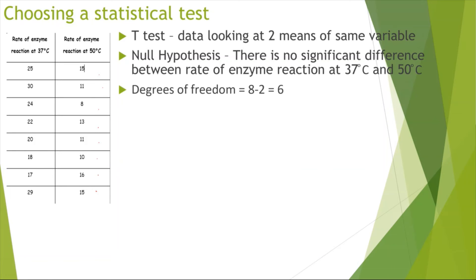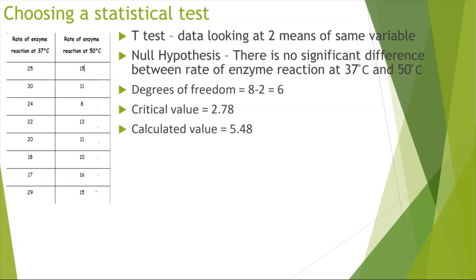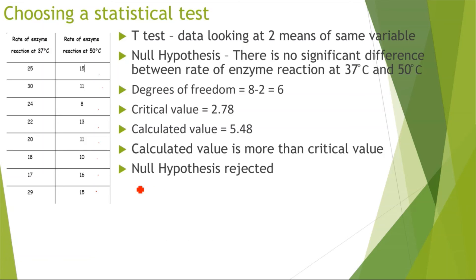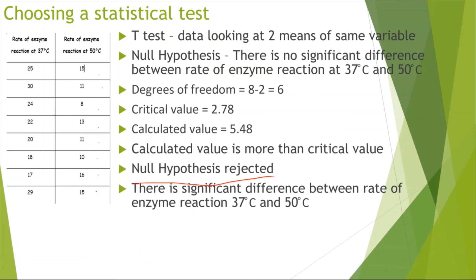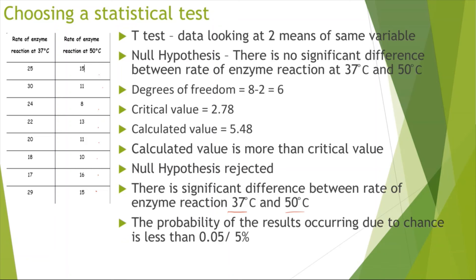From here, I can find the degrees of freedom. In this case there are 8 results, so I do 8 minus 2 which equals 6. That helps me find my critical value of 2.78. With a calculated value of 5.48, my calculated value is more than my critical value, so I can reject my null hypothesis and say there is a significant difference between the rate of enzyme reaction at 37 and 50 degrees. The probability of the results occurring due to chance is less than 0.05 or 5%.